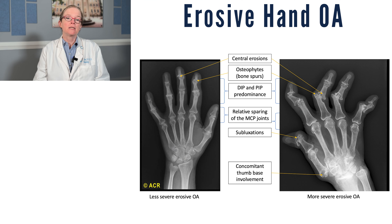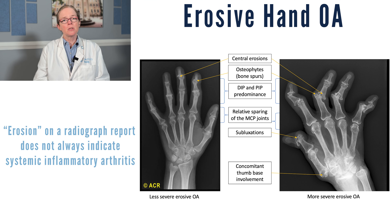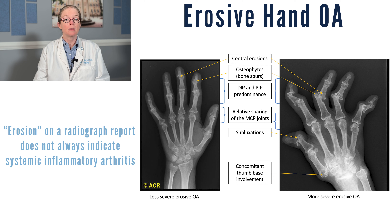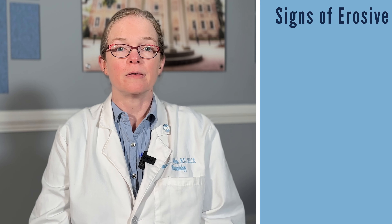Erosive hand OA can be defined by erosions on x-ray. Sometimes when we see the word erosion on a radiograph report, we think this is systemic inflammatory arthritis. But in fact, it can be erosive hand osteoarthritis, particularly if the pattern fits.